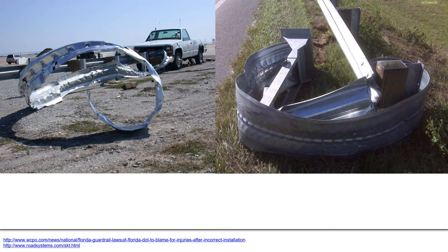The end terminal is an important focal point of a barrier system, and a lot of attention has been paid to it. The beauty of this design is that it's a pretty simple design but very effective — good at transferring forces and great at using the force of the vehicle itself to move the end terminal along the rail, flattening it out and weakening it to the point that it doesn't spear the vehicle.